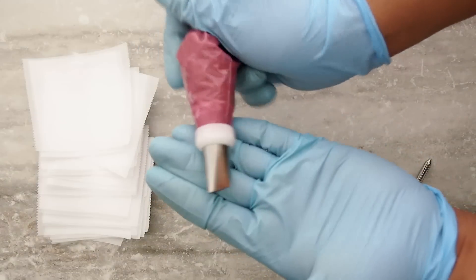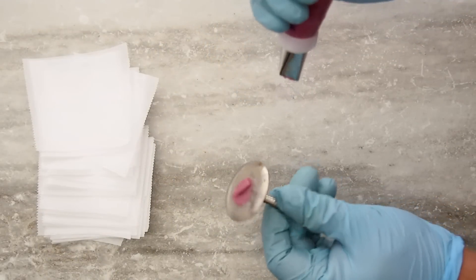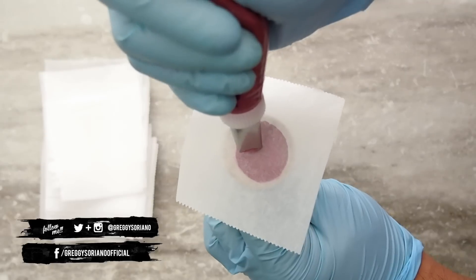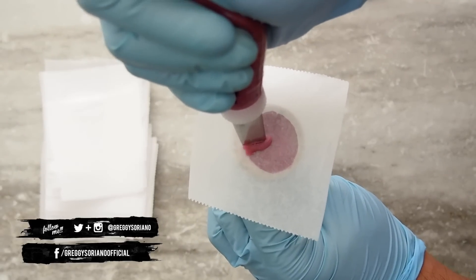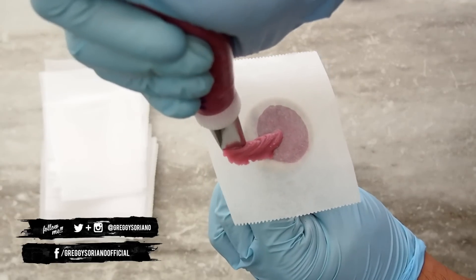First, we're starting off with some parchment squares, a rose nail, and some orchid mauve-ish pink in a number 104 tip. And right here we're going to create a fantasy-like large flower that is really blooming and beautiful with tons of ruffly movement.